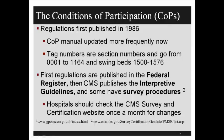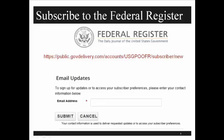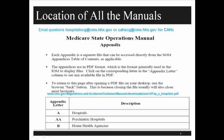How it ends up in the manual is that first they publish in the Federal Register, then they add interpretive guidelines so hospitals will know, and then they have a survey procedure. A good way to keep abreast of all changes is to have one or two people subscribe to the Federal Register. It's free — we used to have to pay money for it.